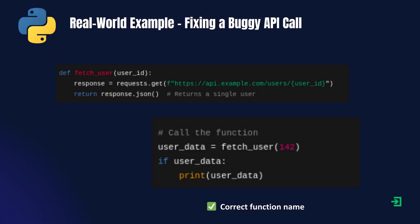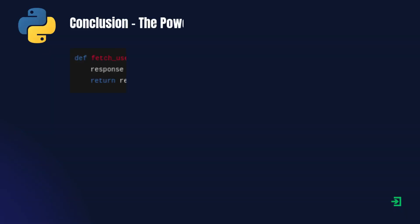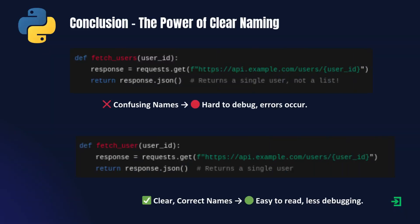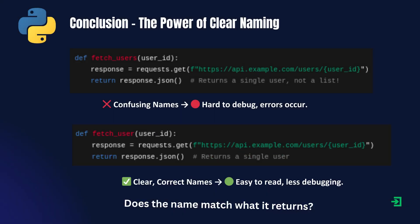In computer programming, clarity is king. A simple function name change can save you hours of debugging. So next time you name a function, ask yourself: does the name match what it returns? Stick to singular for one item and plural for collections, and your code will be cleaner, clearer, and easier to maintain.